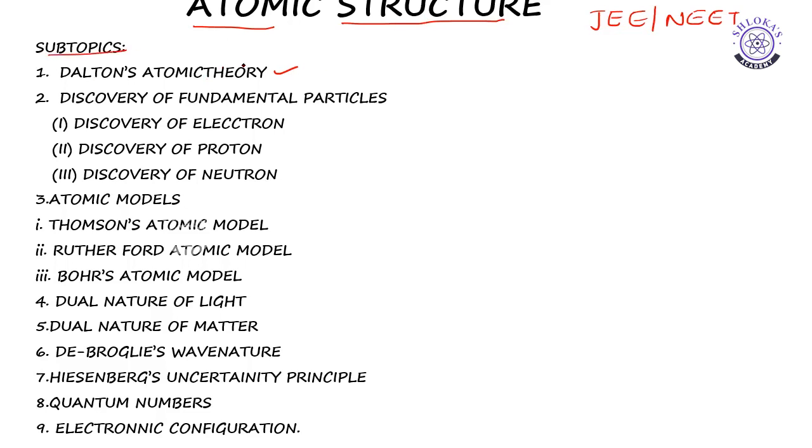Now we are going to discuss atomic structure. In these subtopics, Dalton's atomic theory which we already done, and discovery of fundamental particles. Fundamental particles means we have three important particles: proton, electron, and neutron. You can easily remember as PEN. First we will discuss about discovery of electron, discovery of proton, and discovery of neutron.